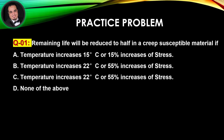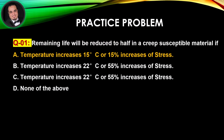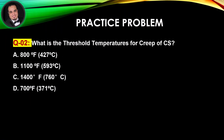Practice questions: Question 1 — Remaining life will be reduced to half in a creep susceptible material if a certain condition is met. Answer is A. Question 2 — What is the threshold temperature for creep of carbon steel? Answer is D.